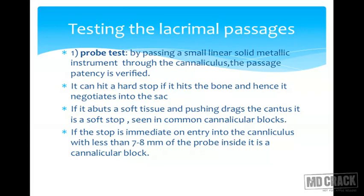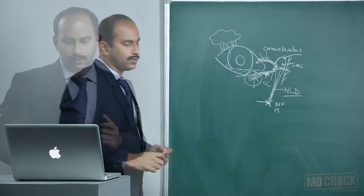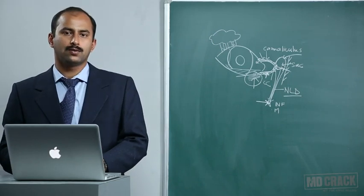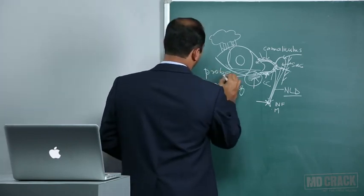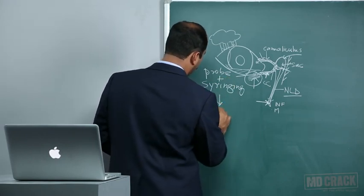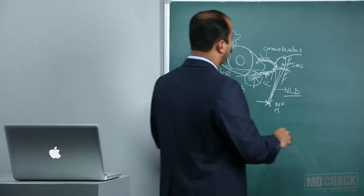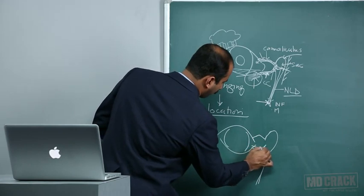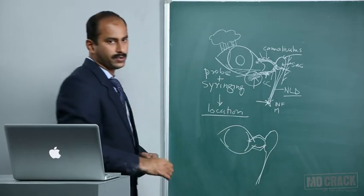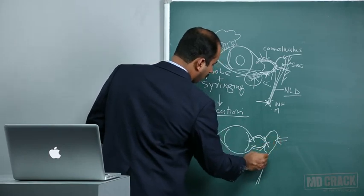If the probe abuts soft tissue rather than bone, it indicates obstruction at the individual canaliculus or common canaliculus. The length of probe inside the canaliculus indicates the possible point of obstruction. The syringing test differentiates further. In common canalicular block, syringing from one end causes immediate fast regurgitation from the opposite canaliculus, and pressure on the sac will not give reflux into the conjunctiva.